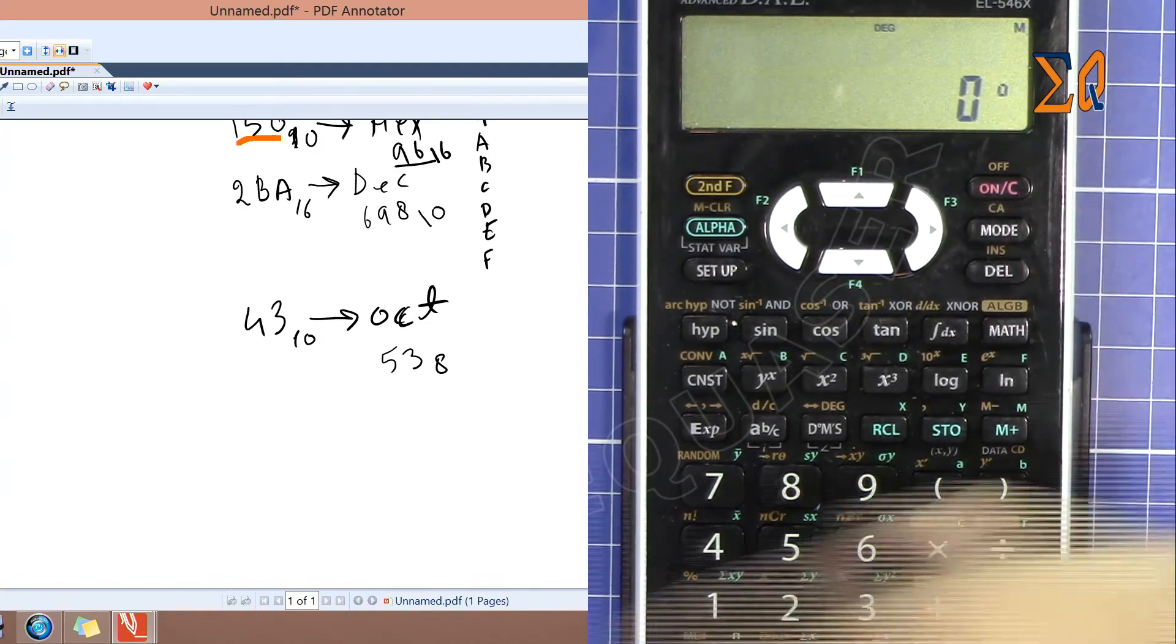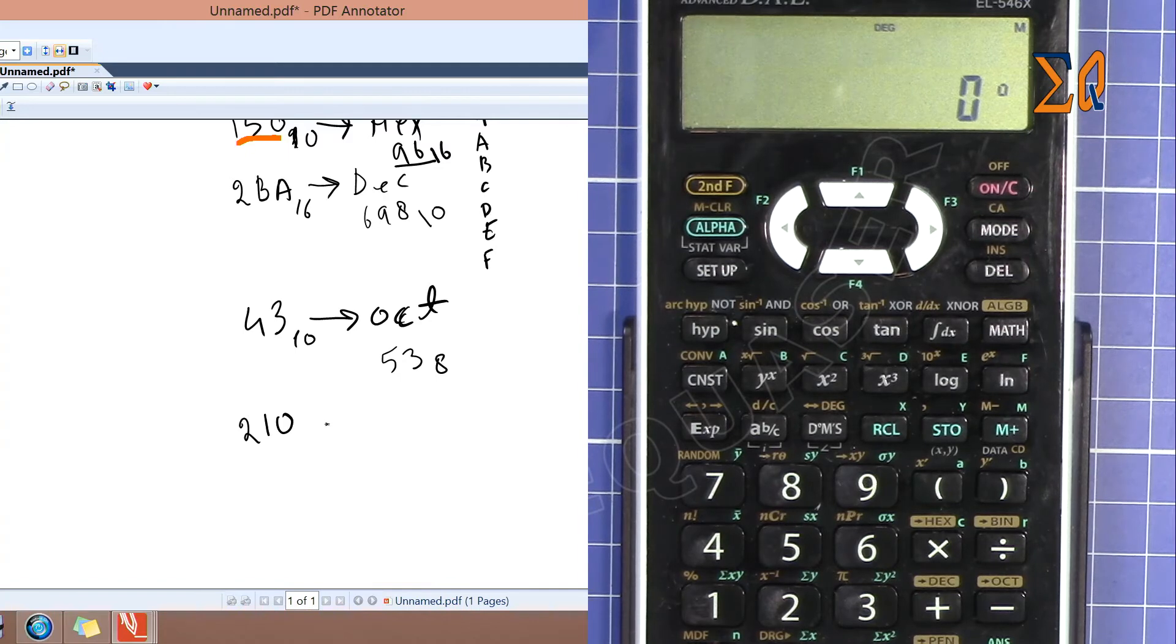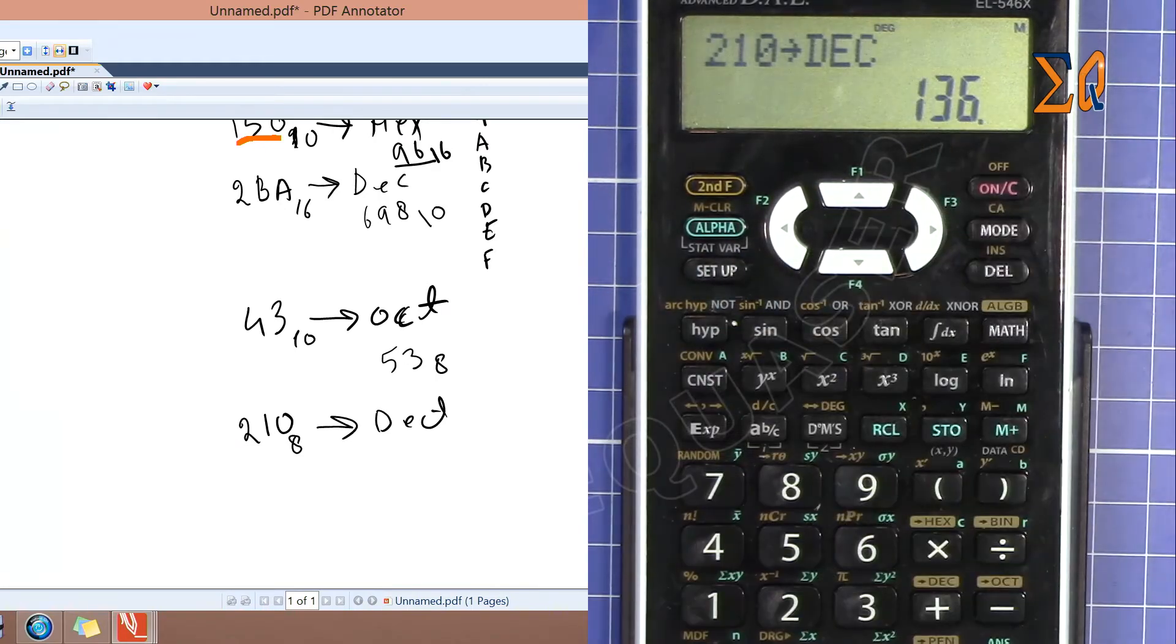Let's say you have 210 in octal, which is base 8, and you want to convert it to decimal. So enter 210, second function, decimal. This is 136.